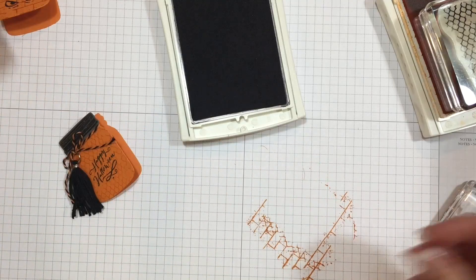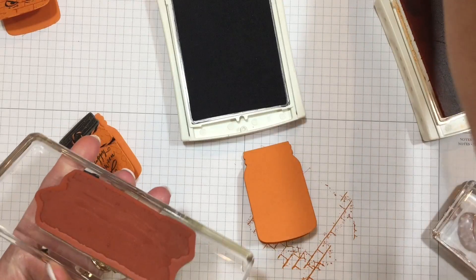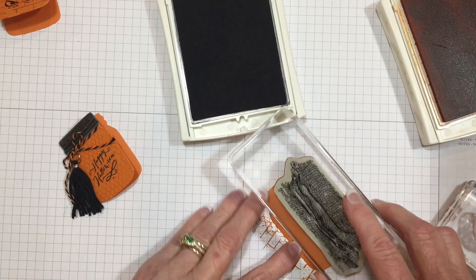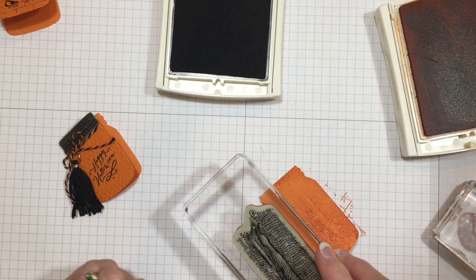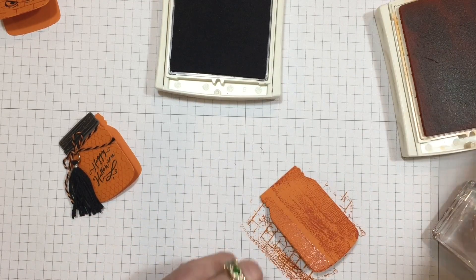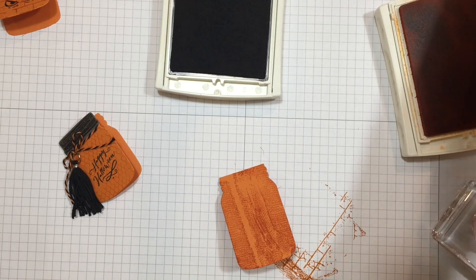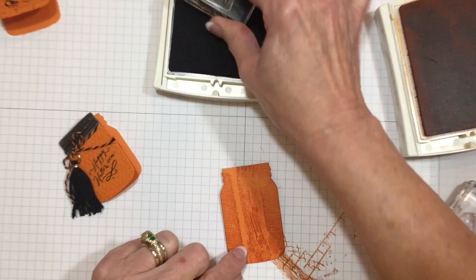For our largest jar, we're going to use the netting. You really don't have to line these up, so it's really kind of nice. Something like that looks wicked and perfect for Halloween, and then we're going to put some words on it.